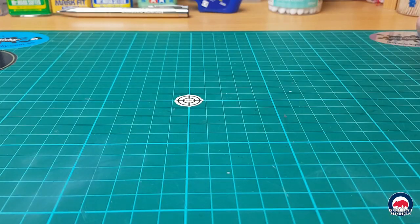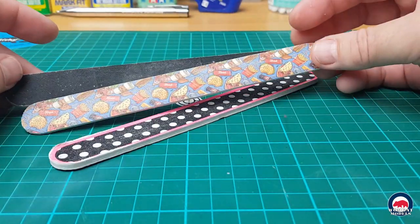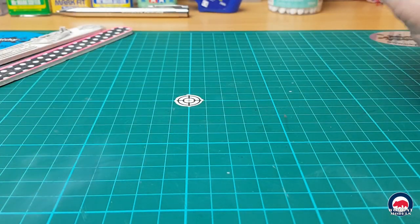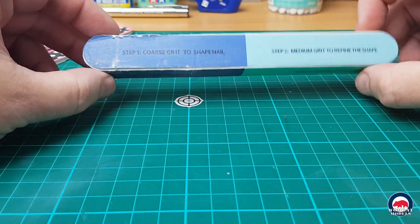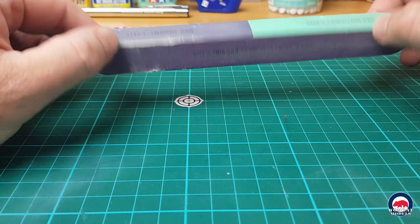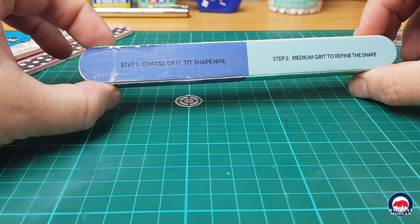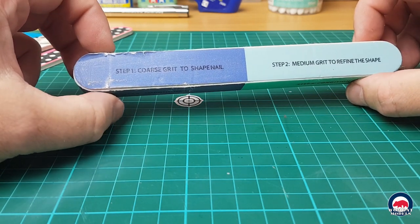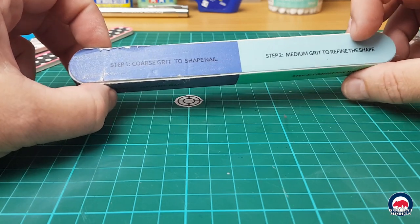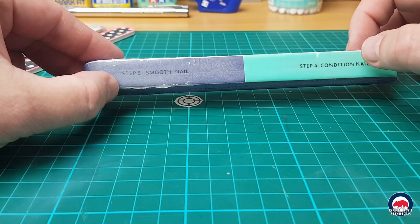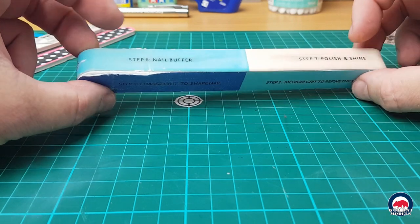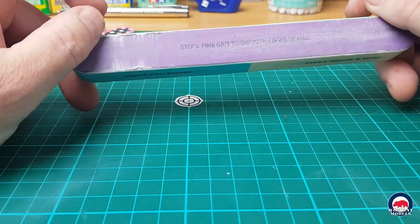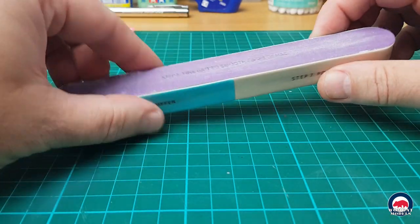And then for general sanding, I use basically just emery boards, nail files that you can get from your local craft shop or Priceline and the likes. And I really like this one, which is a multi-grade sander that you can pick up again from your beauty supply places. So it has multiple grades. So you have step one is coarse, step two is medium, step three fine, and it goes down to four is conditioning, five is smoothing, six is buffing, and seven is polishing. So they come up really useful for just general sanding. They're a little bit soft, so they've got a little bit of give, which is good.